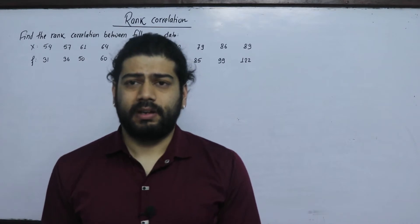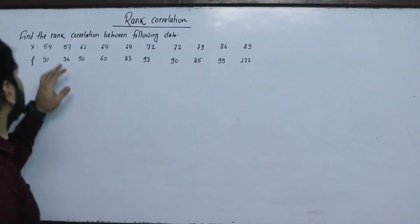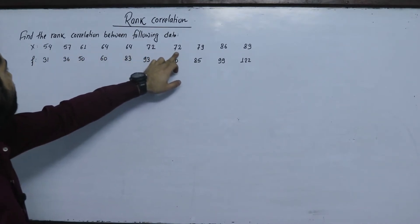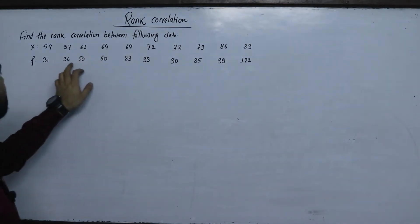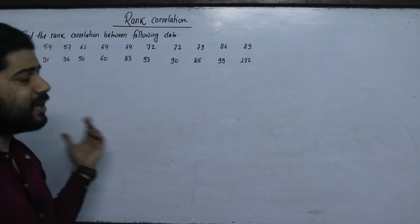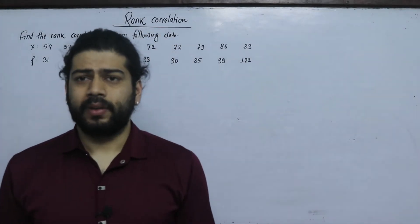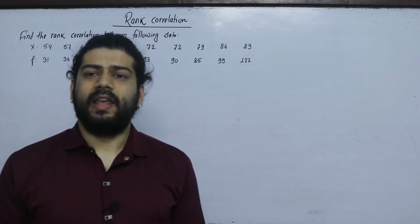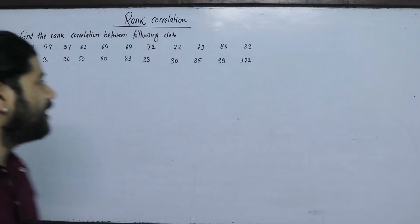In the previous class, we had data without repeats. In this question, X has repeated values — 72 is repeated and 64 is repeated. Y also has repeated values. Since data is repeated, we use average ranking.